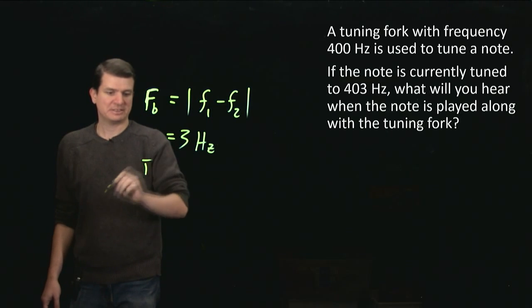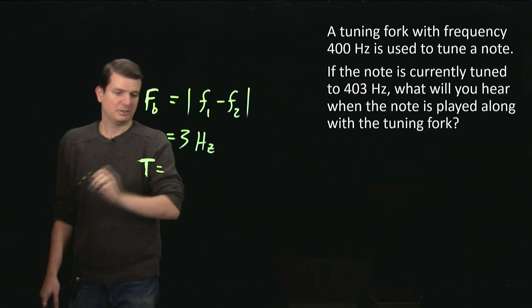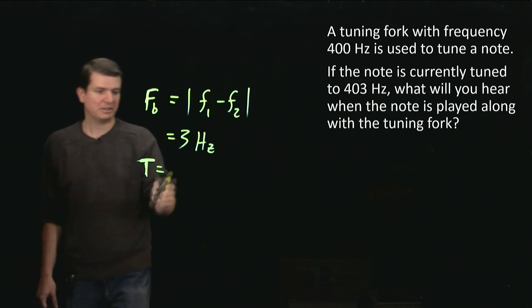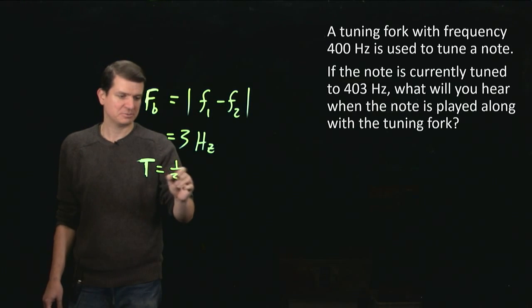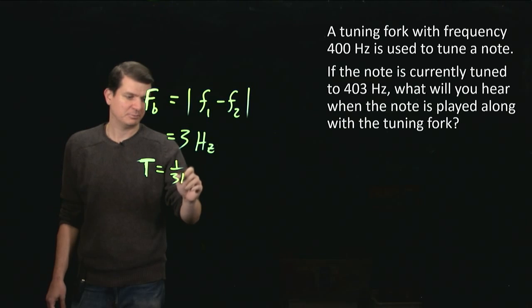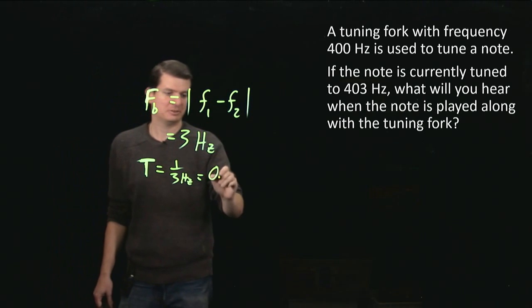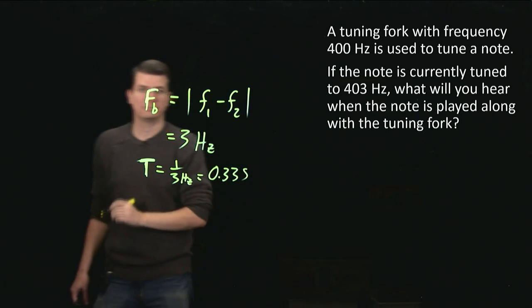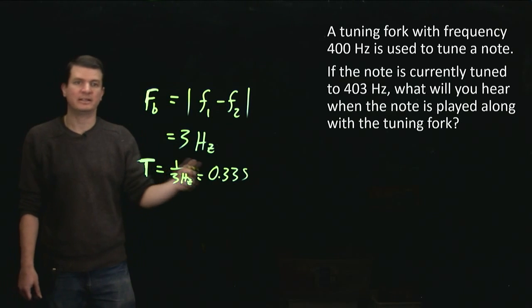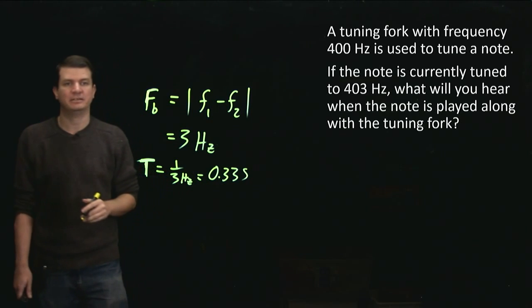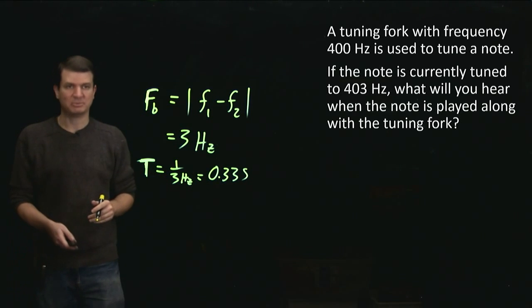And we can ask, so what does that really sound like? I don't know what 3 hertz is, but that means that the period, which is just 1 over f, is just 1 over 3 hertz, which becomes 0.33 seconds. So you'll hear a beat that has a period of a third of a second, and that is something more meaningful.